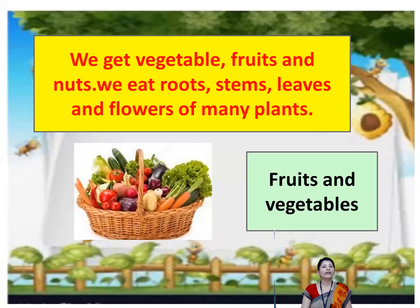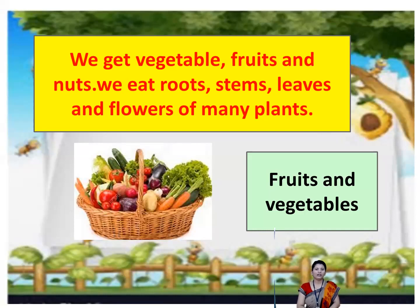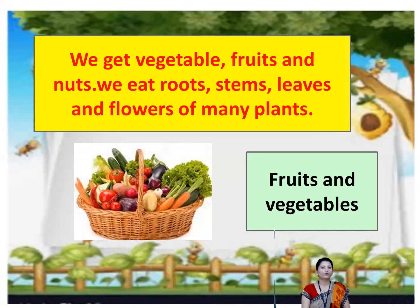We get vegetables, fruits, and nuts from the plants. And we get roots, stems, leaves, and flowers of many plants. Look at the picture — many fruits and vegetables are here.